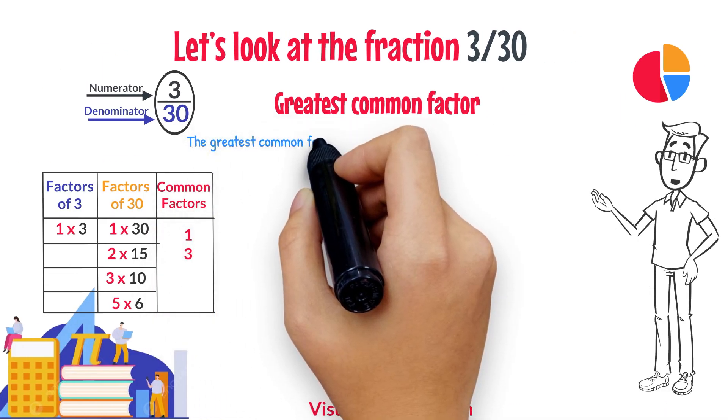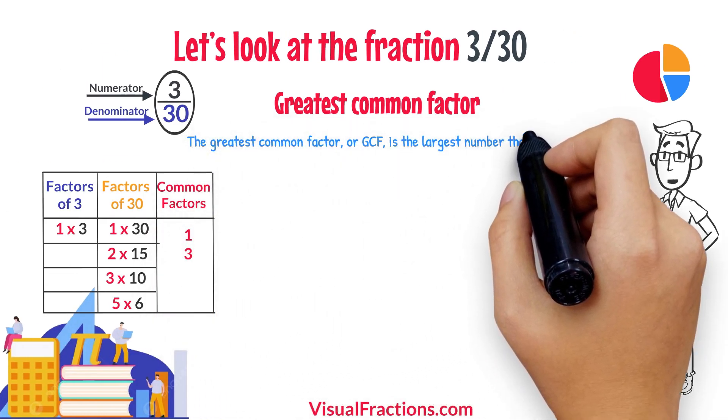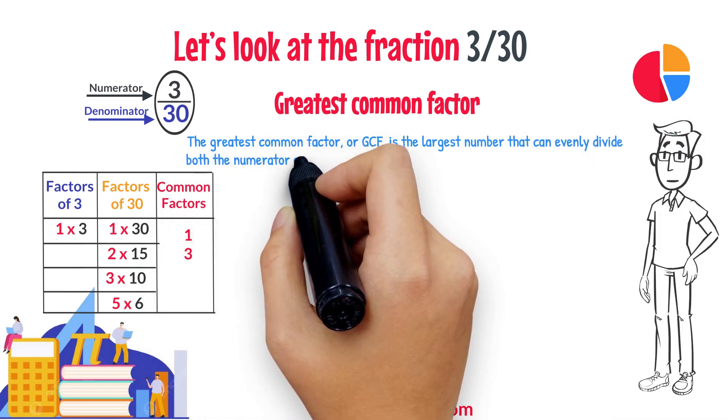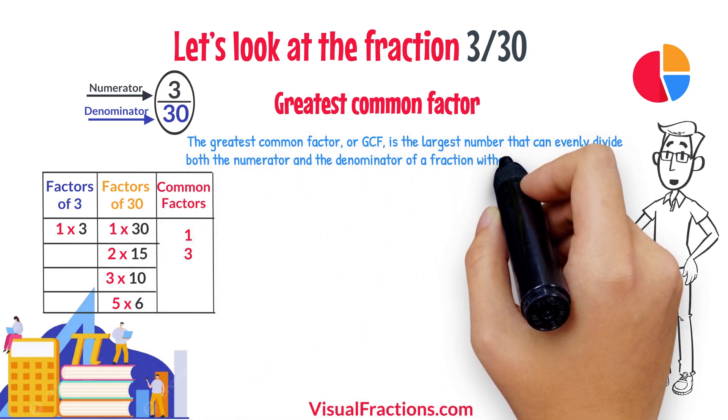The greatest common factor, or GCF, is the largest number that can evenly divide both the numerator and the denominator of a fraction without leaving a remainder.